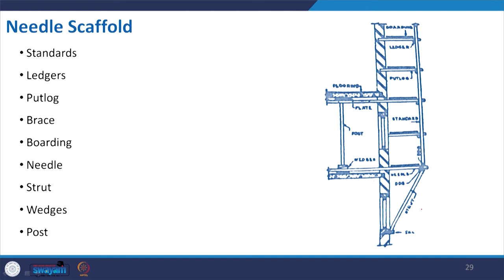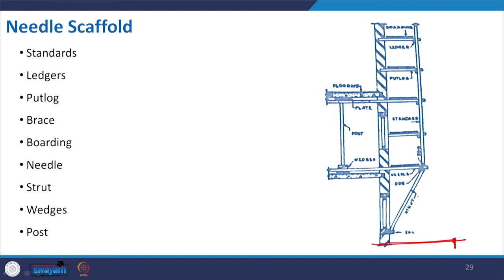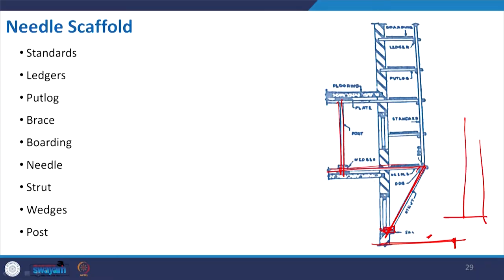Needle scaffold is used when you cannot access the ground because of a busy road, but something needs to be done at the top. Instead of making structure from the ground — which is costly and complex — large needles are inserted inside the structure, supported with props and inclined fixings, and scaffolding is built for repairing the upper structure. It has no connection with the ground, unlike the other categories discussed.